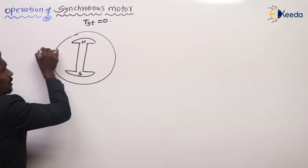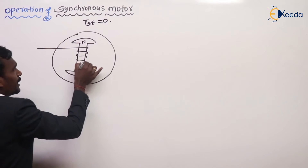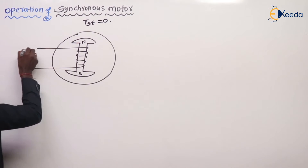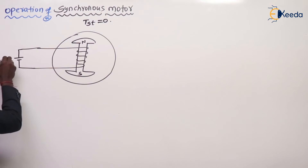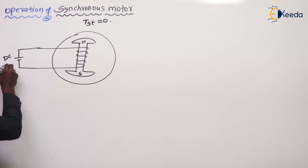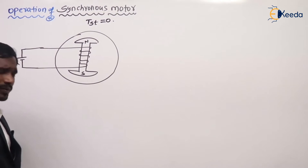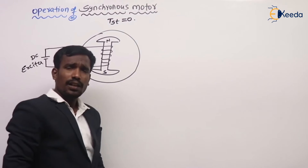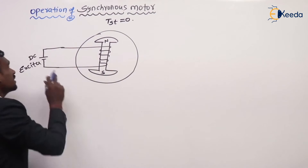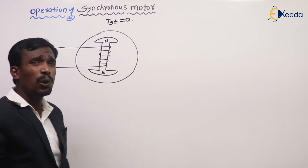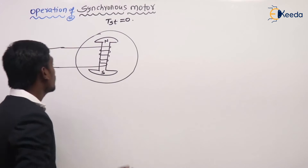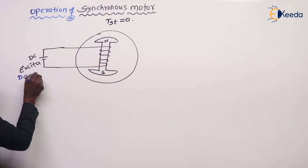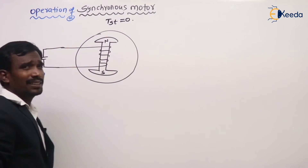This is my rotor. The rotor is connected to excitation, which is given by the DC supply — this is the DC supply, also called the exciter. The DC supply is given by a generator — a DC generator. The DC generators are used as an exciter.